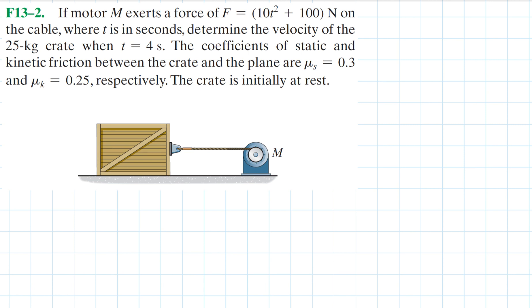This is Chapter 13, Problem 2. The motor exerts a variable force as a function of time — F(t) = 10t² + 100 Newtons on the cable, where t is in seconds. We need to determine the velocity of the 25-kilogram crate when t = 4 seconds. The coefficients of static and kinetic friction between the crate and the plane are μs = 0.3 and μk = 0.25 respectively. The crate is initially at rest.